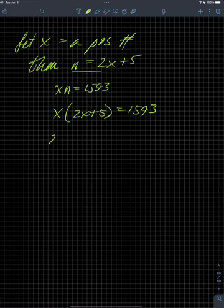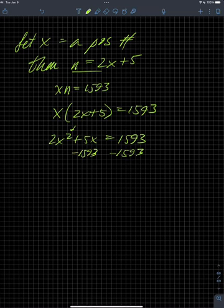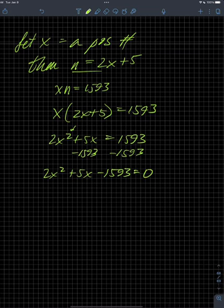Then I'm going to distribute the x and get 2x squared plus 5x. And then recall, if I'm going to solve a quadratic — unless it's a couple of different special cases — I'm going to have to factor this and/or use the quadratic formula. Because of the size of 1593, I'm probably just going to go right to the quadratic formula, even though I most often prefer factoring.